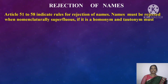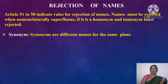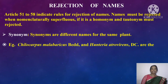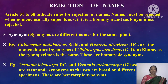Rejection of Names. Articles 51 to 58 indicate rules for rejection of names. Names must be rejected when nomenclature is superfluous, or if it is a homonym or tautonym. Synonyms are of two types: homotypic and heterotypic. Synonyms are different names for the same plant. For example, Chilocarpus malabaricus and Hunteria atrovirans are nomenclature synonyms of Chilocarpus atrovirans since the type specimen is the same — these are homotypic synonyms. Vernonia leucocarpa and Vernonia melanocorpa are taxonomic synonyms as they are based on different specimens — these are heterotypic synonyms.